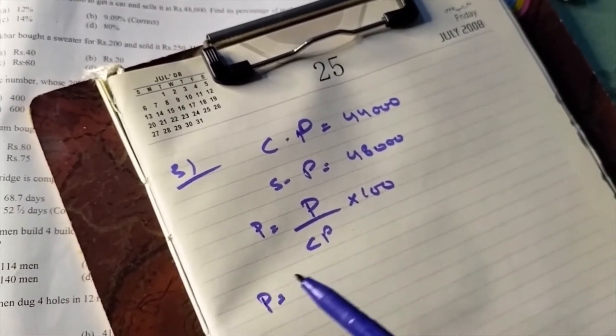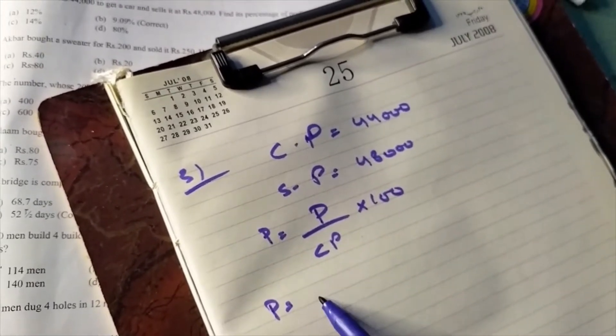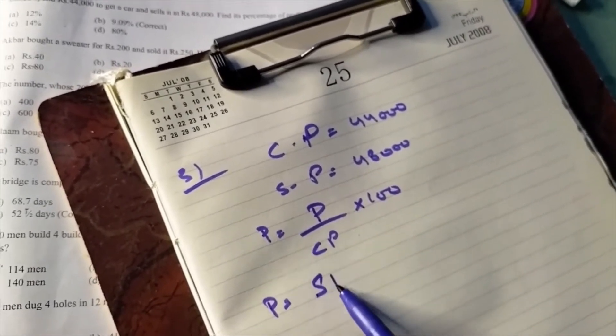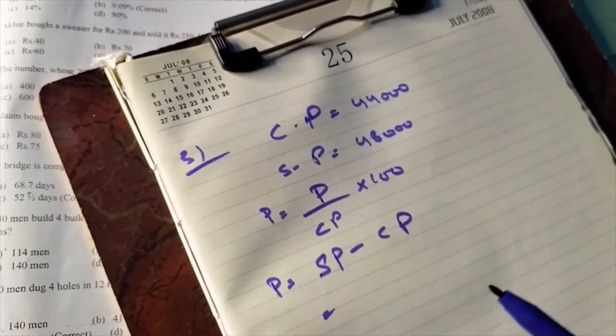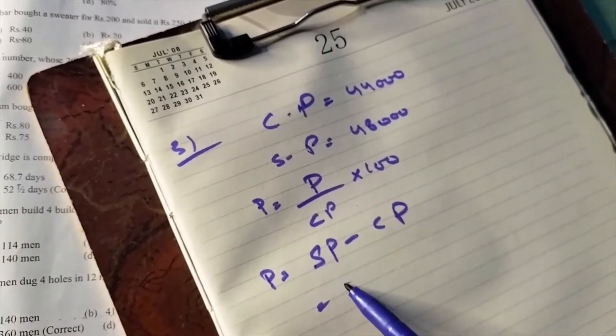To find profit, the formula is SP minus CP. That means you subtract the cost price from the selling price. The selling price was Rs. 48,000.